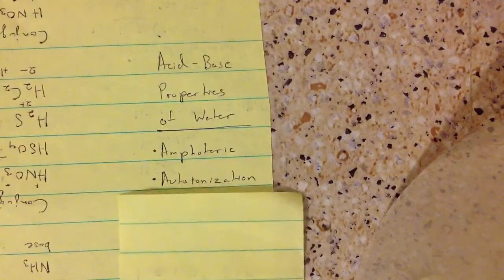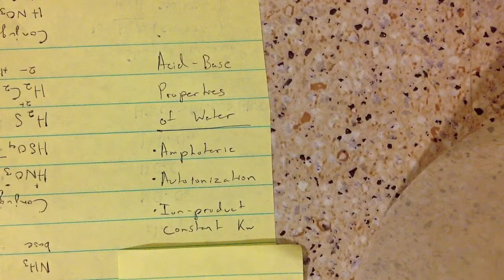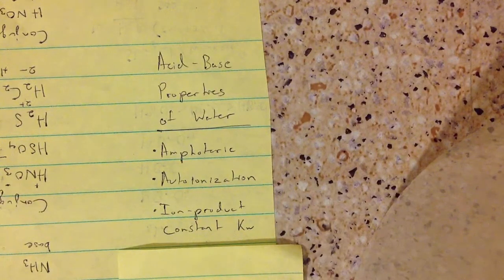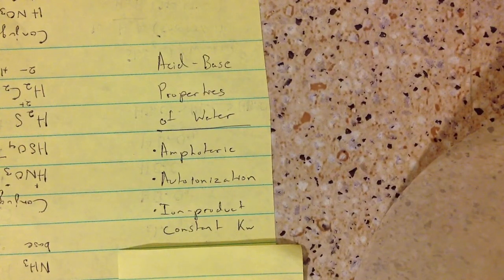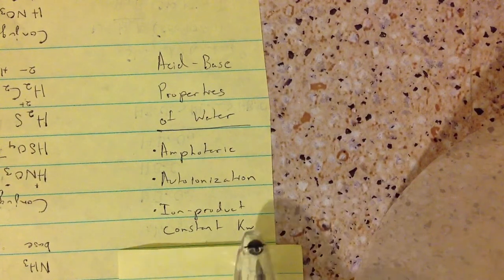Water also has its own constant. The ion product constant also Kw. This is the same as the equilibrium constant, which you might have seen before, which is Kc. This is just specifically for water.